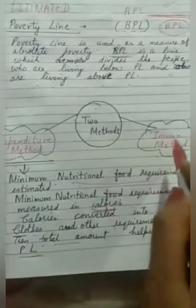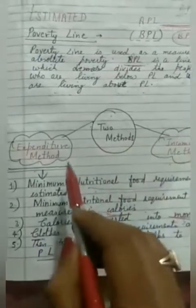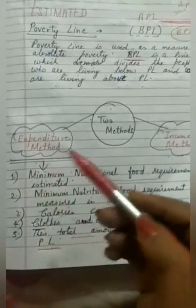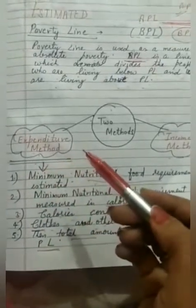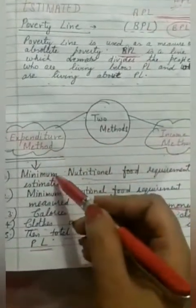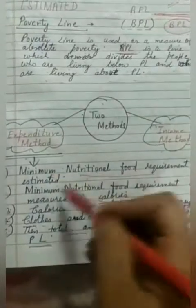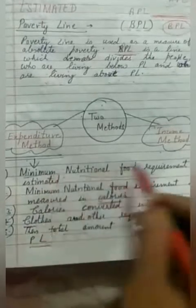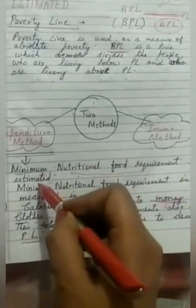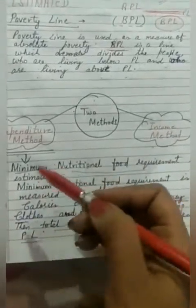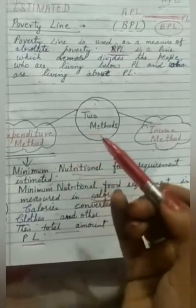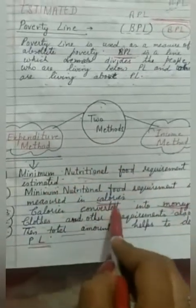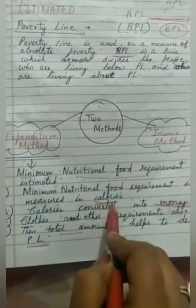In the expenditure method, first of all we take the minimum nutrition food requirement — our basic need is food. We estimate the minimum food requirement. Since we cannot measure poverty line directly from food, we convert that food requirement into calories. Any item we take, we know how many calories it provides.